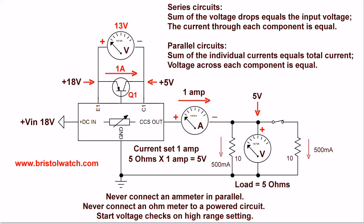Let's clear up some issues on how to use a multimeter. In series circuits the sum of the voltage drops equals the input voltage. The current through each component is equal. The current from the 18 volts is the same as the current through Q1, same as the current through the amp meter, same as the current going through these parallel 10 ohm resistors that produces a 5 ohm load.